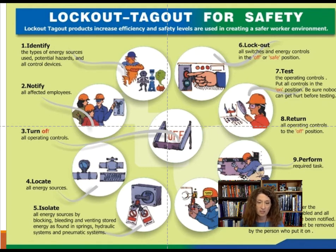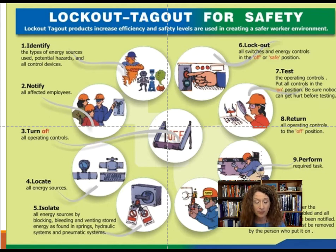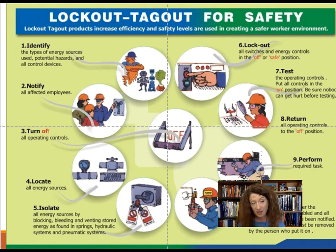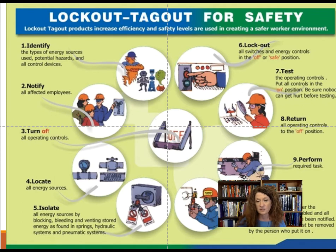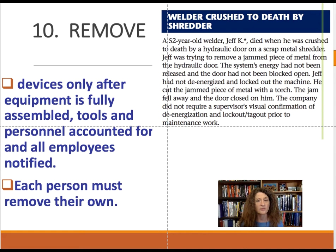Step 9: Perform the task. Step 10: Reassemble in reverse order — make sure all equipment is back together, all tools are removed from the space. At Coal Strip, they count every tool that goes into a confined space, then check them all off a list to make sure nothing is left inside accidentally, because left-behind tools can cause equipment to malfunction. Once everything is verified safe, each person removes their own lock and then you are able to re-energize the source.